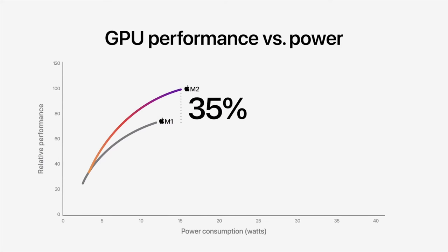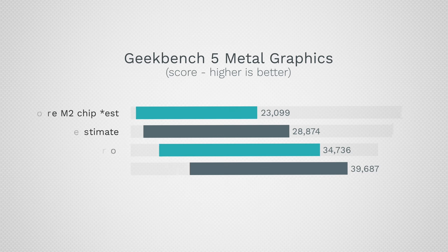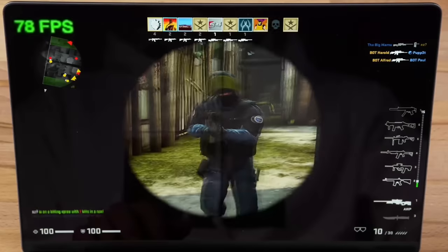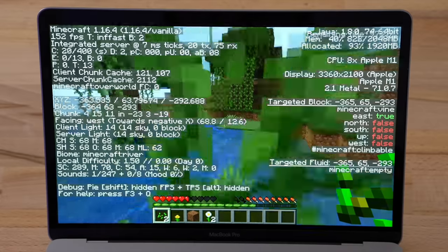Moving on to graphics performance, adding Apple's 35% boost to the M1 gives us 28,874 points for the 10-core M2. Taking a fifth away gives 23,099 points for the binned 8-core M2 in the MacBook Air. Even the binned 14-core M1 Pro destroys the full 10-core M2 by about 20%, and the full 16-core M1 Pro is 37.5% faster. That said, over 28,000 Metal points is more than enough for 90% of users and should handle light gaming like League of Legends or Minecraft just fine.